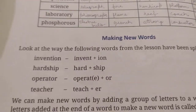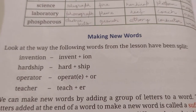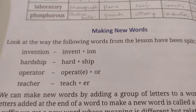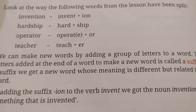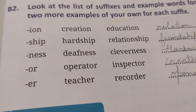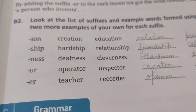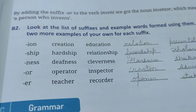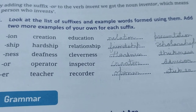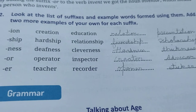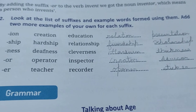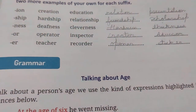After that, we have making new words. They have said that if we have any suffix given, we can use it to make a new word. In B2, we have a list of suffixes and we have to make two new words each. Like the suffix ION gives: creation, education, relation, presentation. Suffix SHIP gives: friendship, scholarship. Suffix NESS gives: hardness. Suffix OR gives: advisor. Suffix ER gives: teacher, opener.